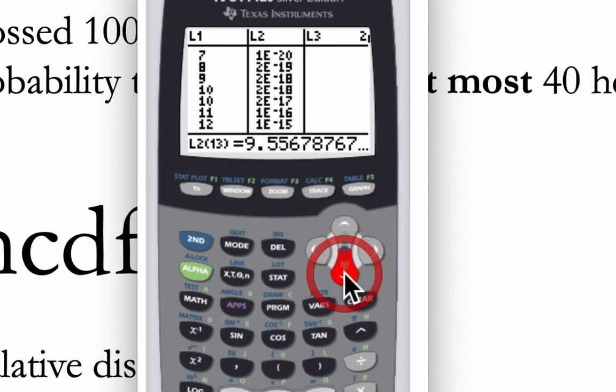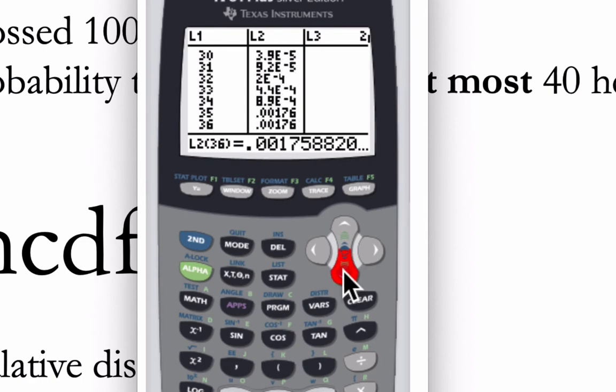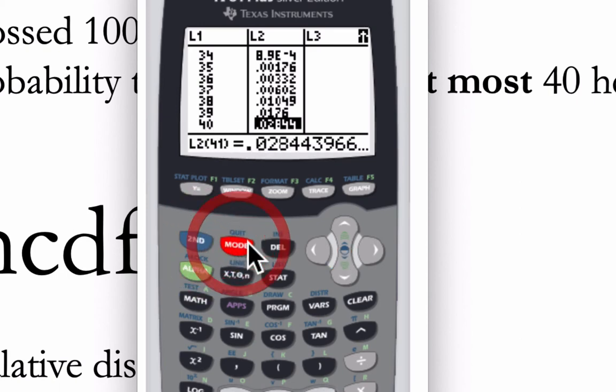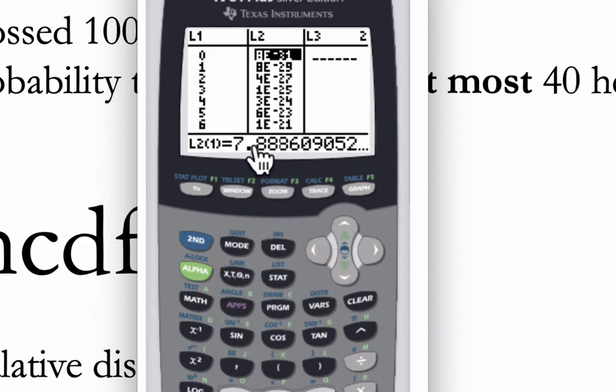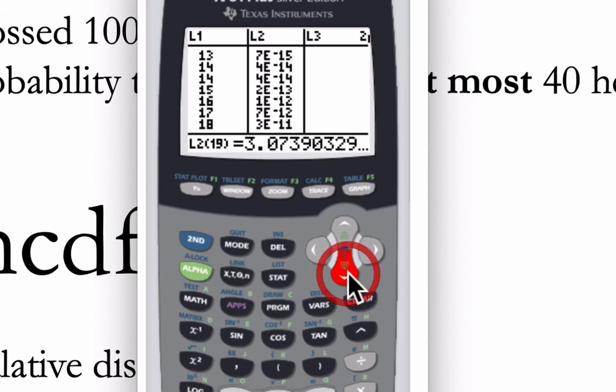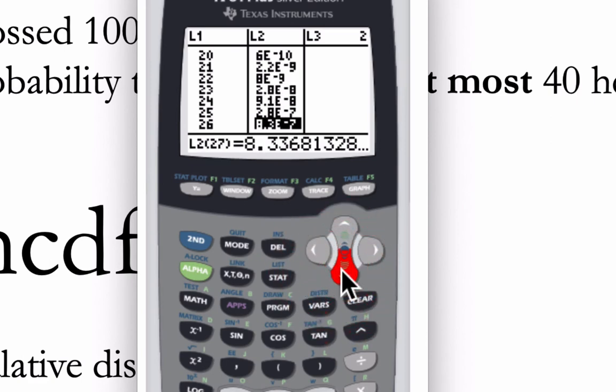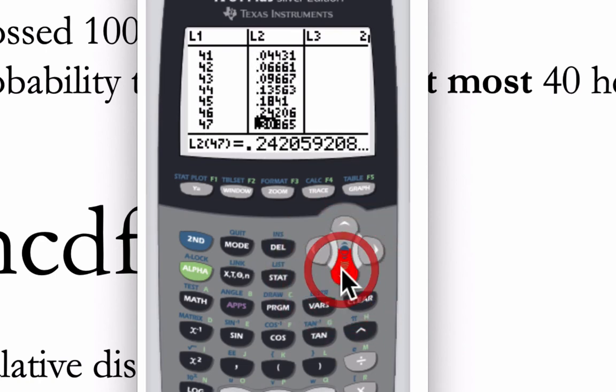But if I scroll down here to a more reasonable value—okay, so here was the value we just got for 40 heads, if you remember. You can see that here: 0.028, that value's right there. So what it's doing in each row of this table is telling you the probability, the binom CDF, for at most the number of heads listed in the first column.